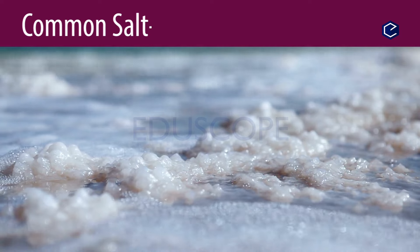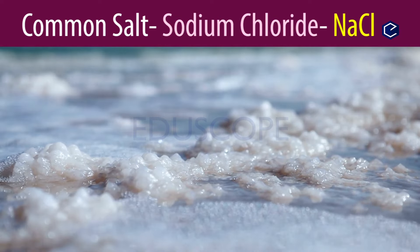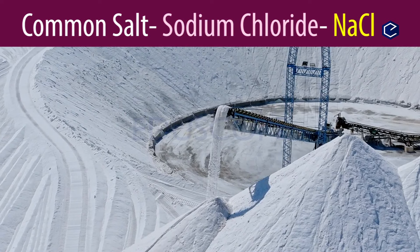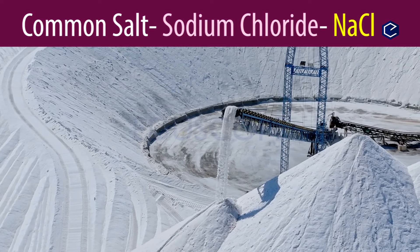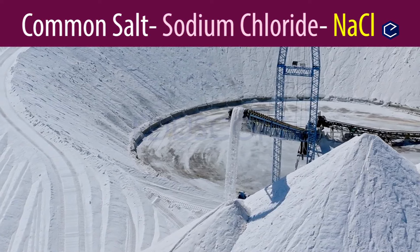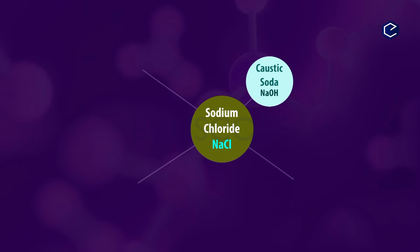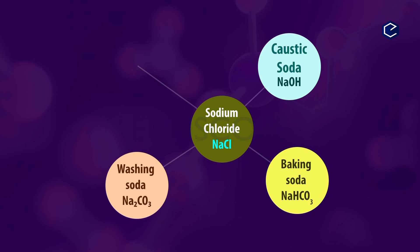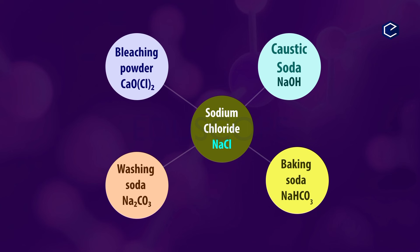Sodium Chloride is used to make many chemical compounds in the industry, including Sodium Hydroxide (caustic soda), Sodium Bicarbonate (baking soda), Sodium Carbonate (washing soda), Calcium Chloride, and Bleaching Powder.